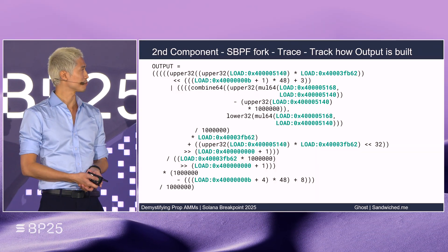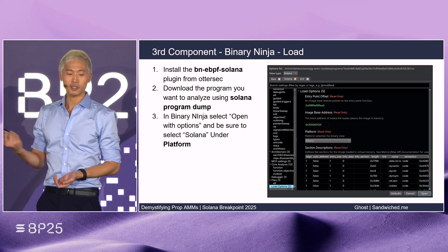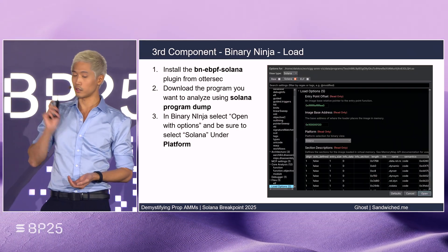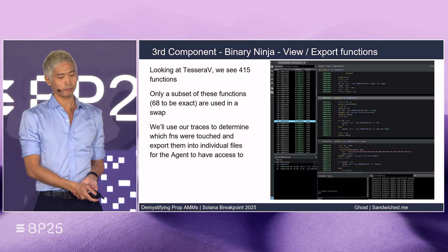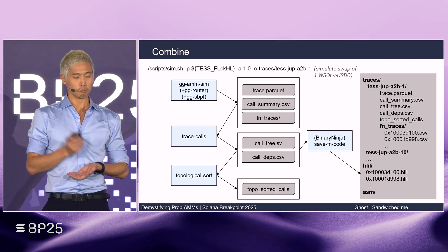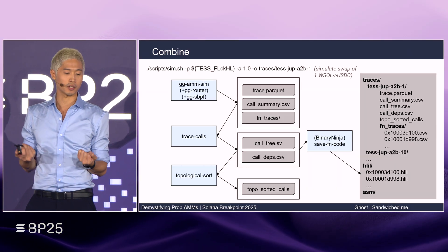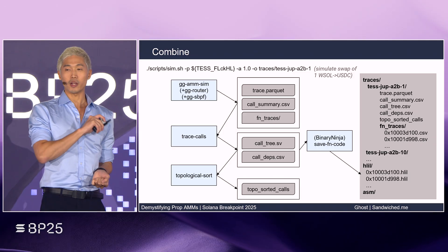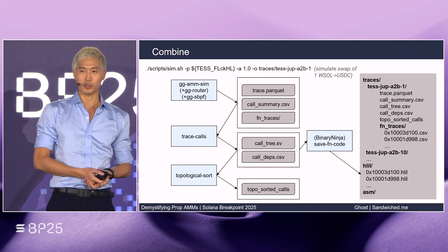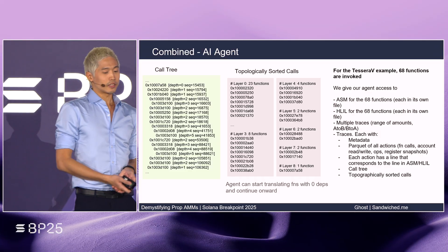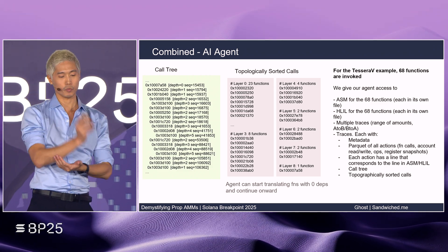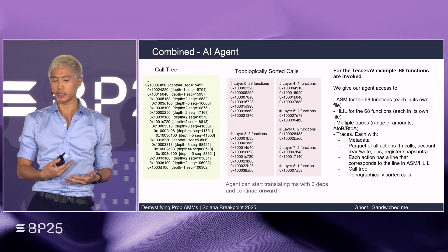You can use a tool like Binary Ninja to decompile the Prop AM — you need to install a plugin from Autosack, dump the on-chain program, and then select Solana. This program has 415 functions, but a swap only touches 68. We use our code summary to explore those functions and put everything together into a repeatable prop pipeline. One script simulates a swap and writes a full report bundle. The idea is that for every swap simulation, it becomes a case file for your AI agent to consume — or you can read it yourself. Topologically sorting code trees means agents can start from the ground up, translate functions first, and keep going up. The AI agent receives all the traces, metadata, and decompiled code.